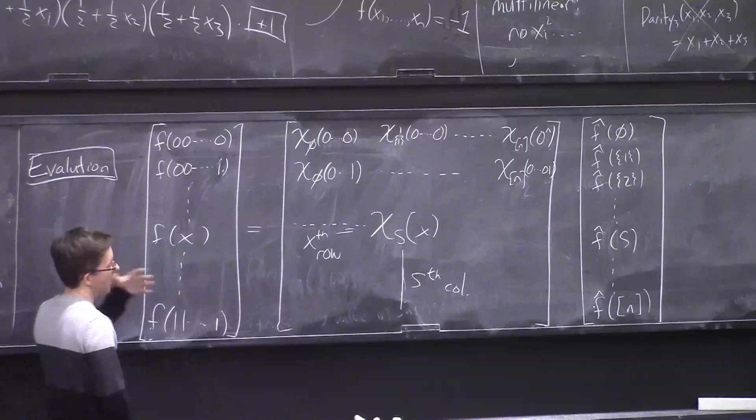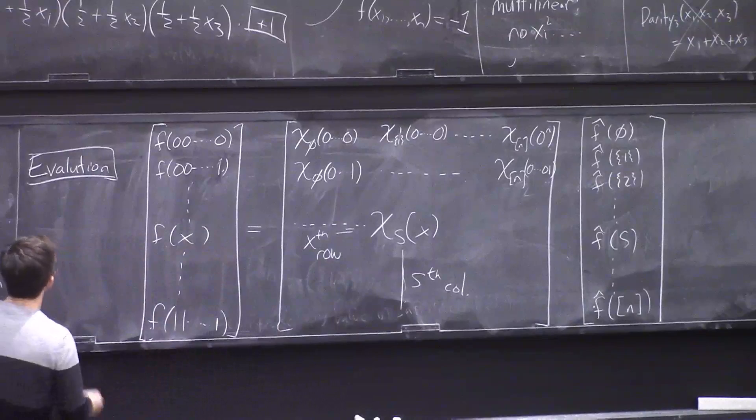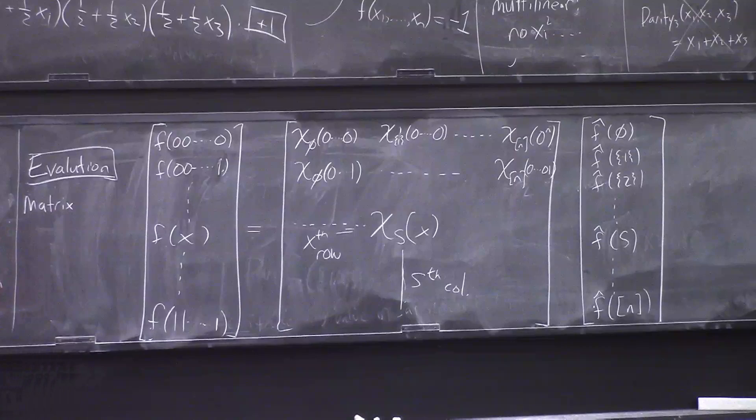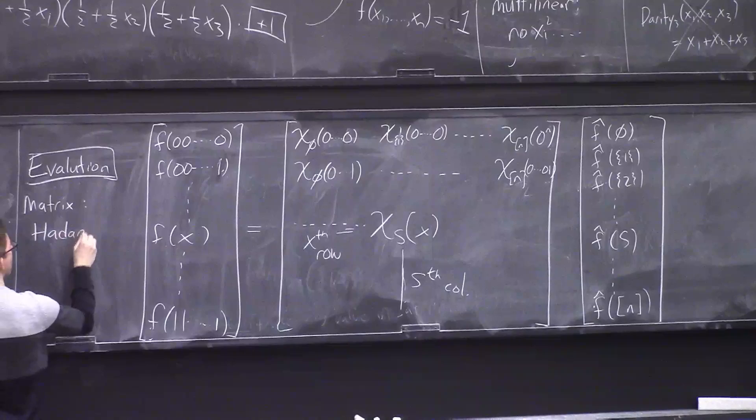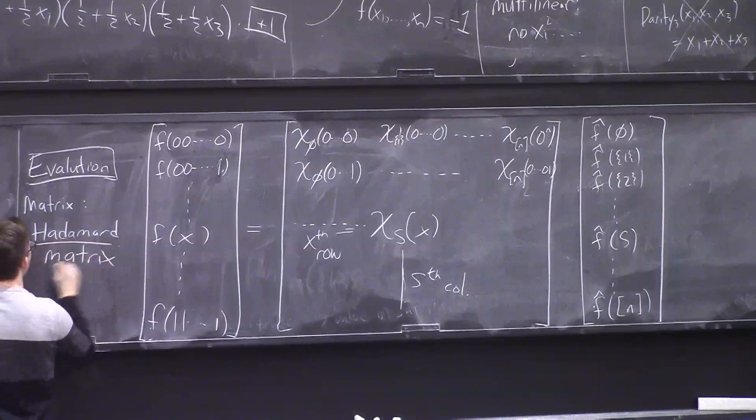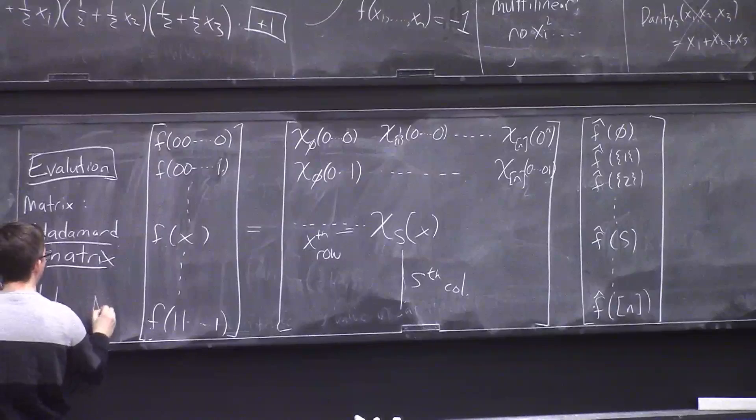This explicit matrix is what we previously called the DFT matrix. In this case it's called the Walsh-Fourier transform, or the Hadamard-Fourier transform — we'll just call it the Hadamard matrix, with notation H sub capital N, where capital N is 2 to the little n.